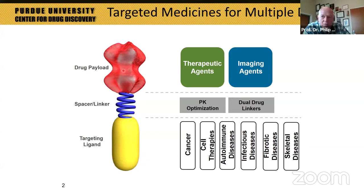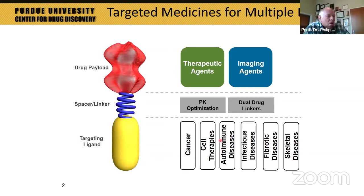Our focus over the past 40 years has been to find ways to target good medicines very specifically to diseased cells and avoid any uptake by healthy cells. The design uses a targeting ligand to carry the attached drug specifically to the diseased or pathologic cell type, connected via a spacer to an otherwise well-characterized drug. We commonly deliver both therapeutic agents to treat a disease and imaging agents to image it. The diseases we target include cancer, autoimmune diseases like rheumatoid arthritis and multiple sclerosis, infectious diseases like malaria and COVID-19, fibrotic diseases like cirrhosis and idiopathic pulmonary fibrosis, and skeletal diseases like broken bones.